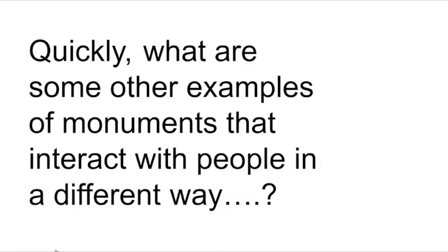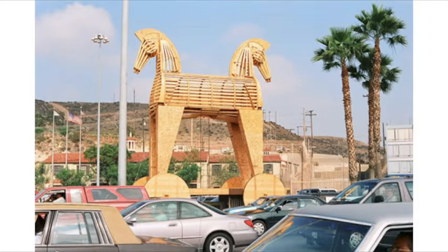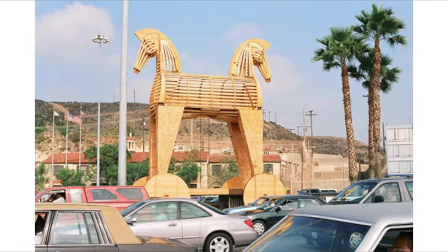Quickly, some other examples of monuments that differ in how they interact with people and the materials they use. Marcos Ramirez Erre's Toy an Horse is a play on the Trojan horse — an ancient Greek myth. This monument was installed for an entire year at the Tijuana and San Diego border due to the high influx of people moving between both sides. Rather than a one-headed horse, it became a two-headed horse, speaking to how both sides consider each other an enemy and yet are deeply dependent on each other to survive.